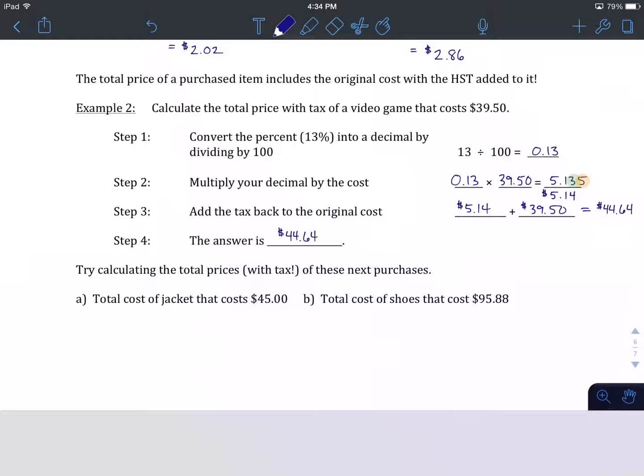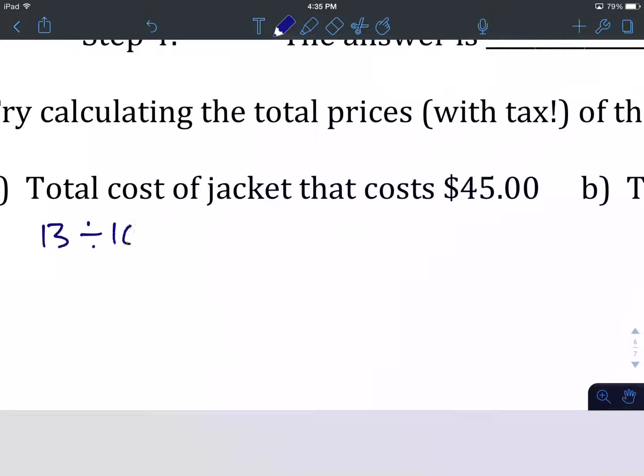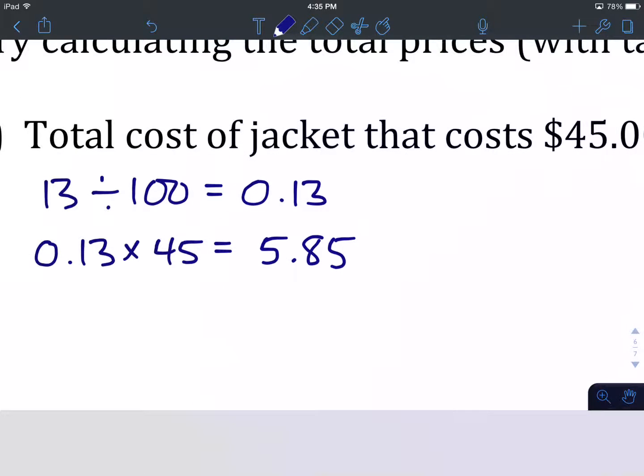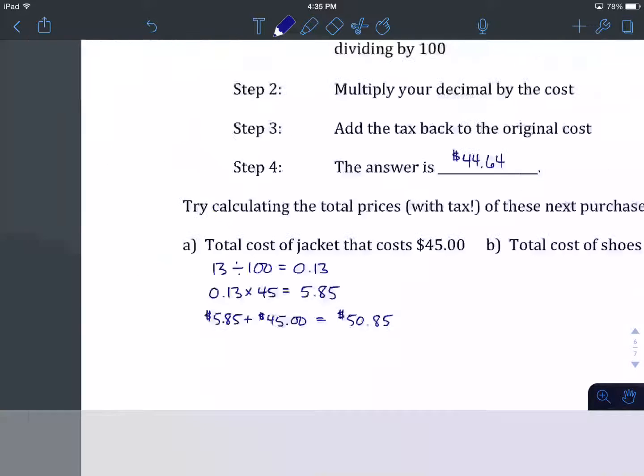We're going to do two more examples here. Now, we're trying to look not just for the HST, but for the final price. We'll do A together. Total cost of a jacket that costs $45. We know HST is a fixed amount. It's going to be 13%. We take our 13, divide it by 100. That's going to give us 0.13. We multiply our decimal by the cost of the item, our jacket, which is $45. That's what we type into our calculator. 0.13 times 45 gives us $5.85. No rounding required this time. That's awesome. This is the new step. We're going to take our HST, which is $5.85, and we are going to add it back to the price of the jacket, which is $45. That we type into our calculator. $5.85 plus $45 gives us a final tally of $50.85 for our jacket.